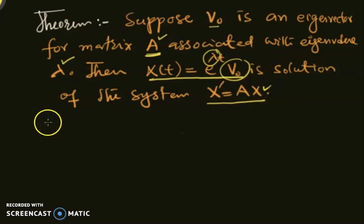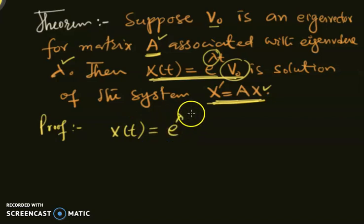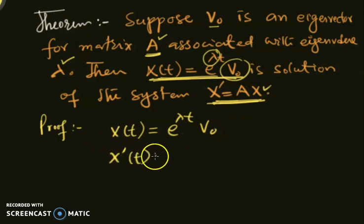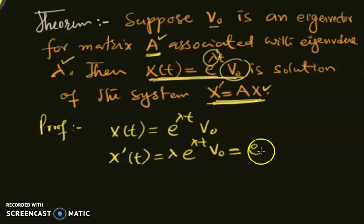We can prove this theorem — it's not hard. We will just verify that this expression solves the system. So x(t) = e^(lambda·t) · v0. Let's differentiate it. Since v0 is a constant vector, we just need the derivative of the scalar part, which gives lambda · e^(lambda·t) · v0. We can write this same quantity as e^(lambda·t) times lambda · v0.